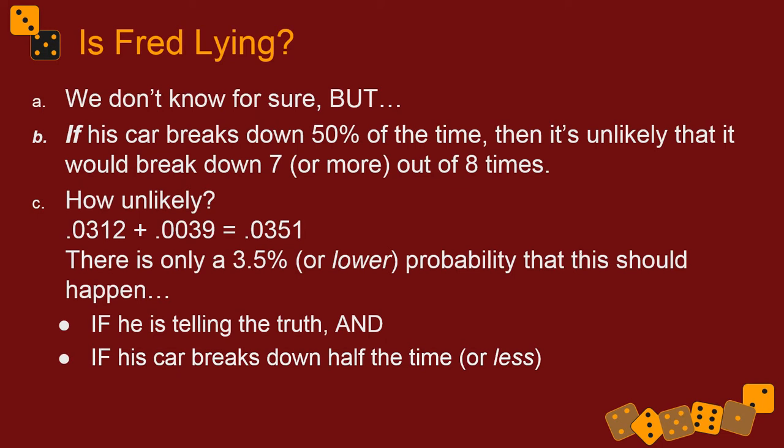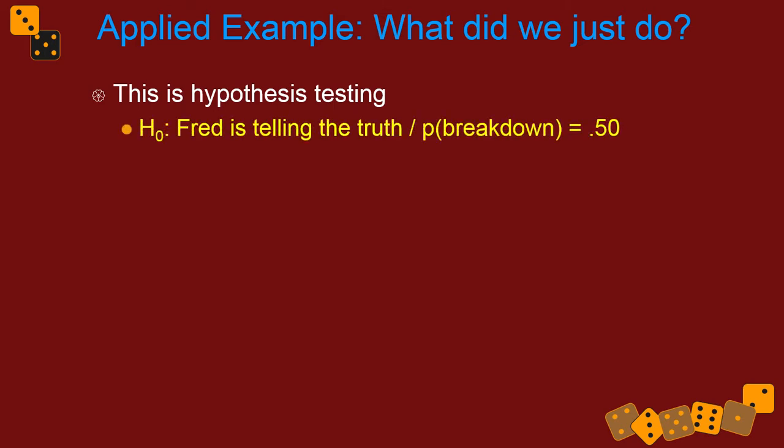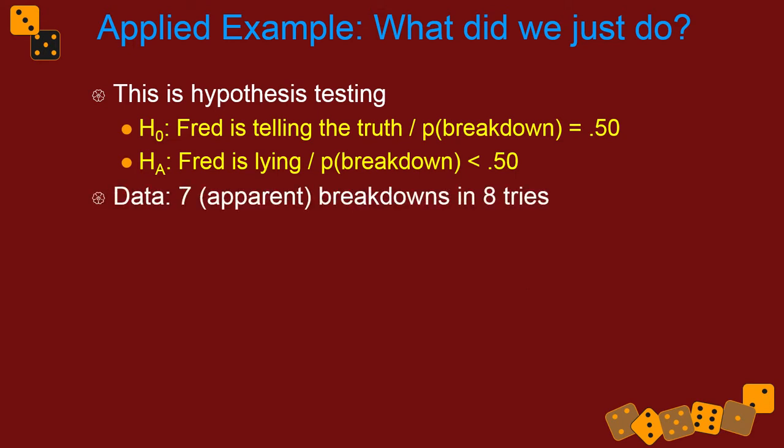It's pretty low. Now, you never get zero, so Concha just has to decide what her level of comfort is with making decisions. She has to decide what her alpha is, because we just did hypothesis testing. H0 would be Fred is telling the truth with the assumption that the probability of a breakdown is 0.5. The alternative would be Fred is lying, and the probability of a breakdown is less than 0.5. So the data, we have seven breakdowns or apparent breakdowns in eight tries. And the probability of everything happening if what Fred is saying is true and with the assumption of 0.5 probability on each try, the p-value is 0.04.